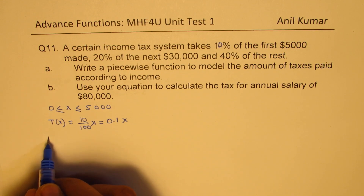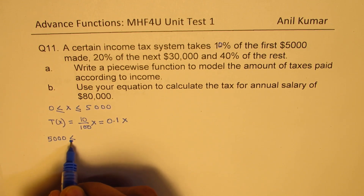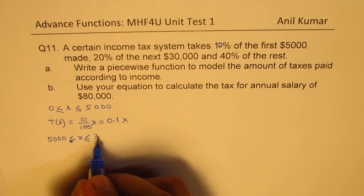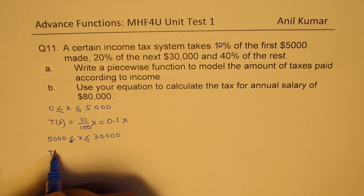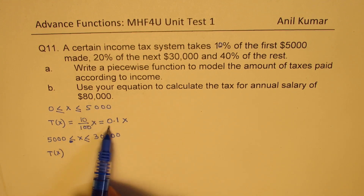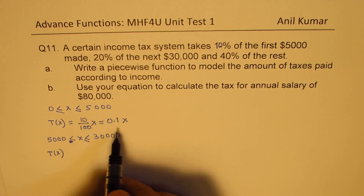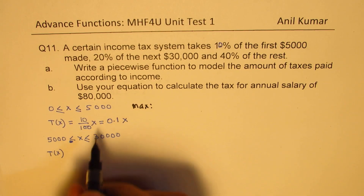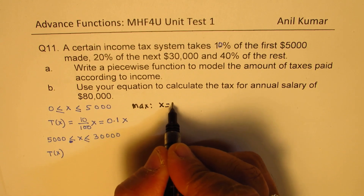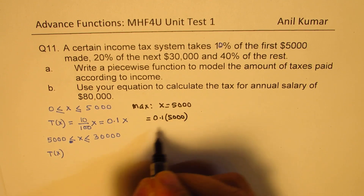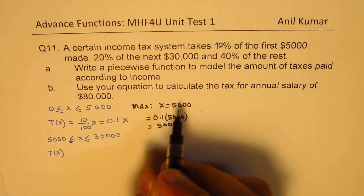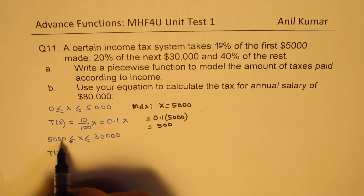When the value of x is from 5,000 — not included here — up to 30,000, which is included. On the first $5,000 you paid a tax of 10%, so it's important to calculate the maximum tax in this interval. The maximum you pay is when x equals 5,000, so that is 0.1 times 5,000, which equals $500.